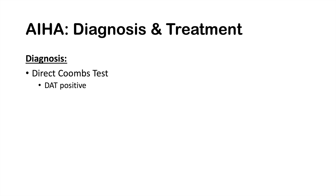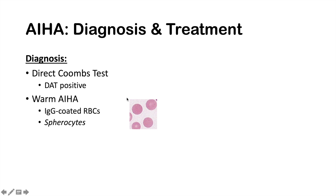Diagnosis is based on lab work showing evidence of hemolysis — increased bilirubin, increased LDH, and decreased free haptoglobin — followed by a direct Coombs test, which is positive in autoimmune hemolytic anemias. To differentiate subtypes: warm AIHA shows IgG-coated red blood cells and spherocytes on blood smear; cold AIHA shows complement-coated red blood cells. The diagnosis of paroxysmal cold hemoglobinuria also relies on these tests along with clinical features.